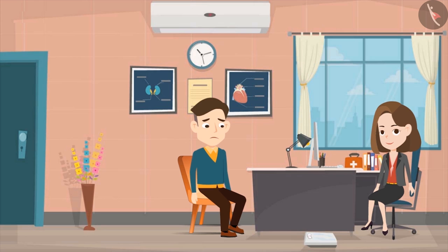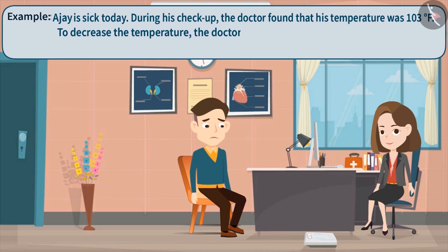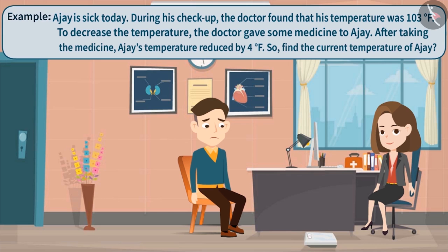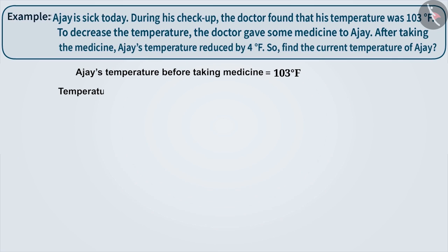Example 2. Ajay is sick today. On examination, the doctor found that his temperature was 103 degrees Fahrenheit. The doctor gave Ajay some medicine, which he took. His temperature reduced by 4 degrees Fahrenheit. So, what would Ajay's current temperature be? Before medication, Ajay's temperature was 103 degrees Fahrenheit, which is a positive integer. After medication, Ajay's temperature reduced by 4 degrees.